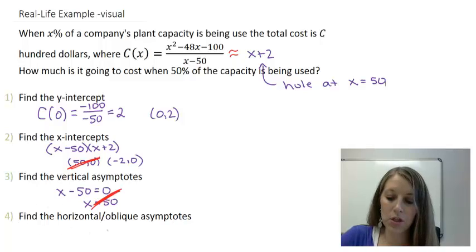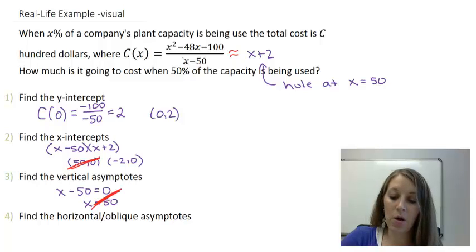Moving on to my horizontal or oblique asymptote. I don't really have to do that step anymore because I know everything cancels, and I really just kind of have this equation here, which is a linear equation. So I'm not going to do any extra unnecessary work.